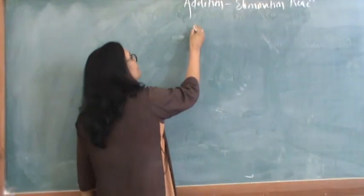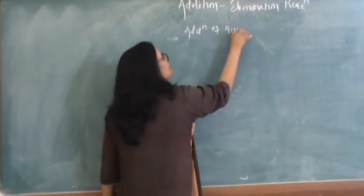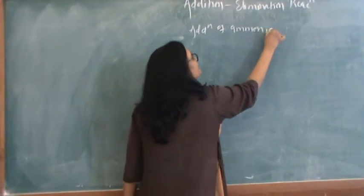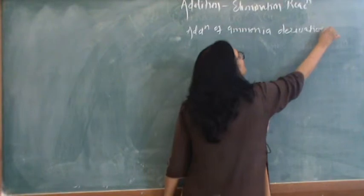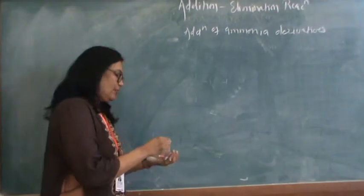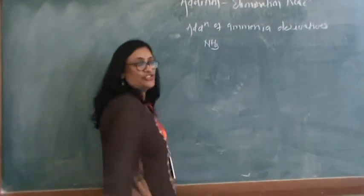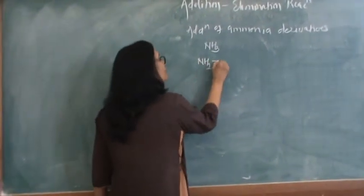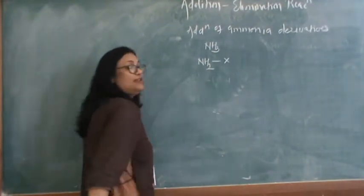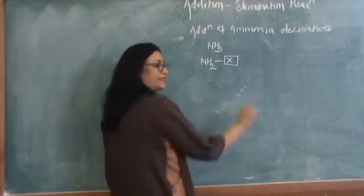We are going to see addition of ammonia derivatives. What is ammonia? Everyone knows that is NH3. And its derivatives means one of the hydrogens of ammonia is replaced by some other molecule. In general, I am writing it as X.